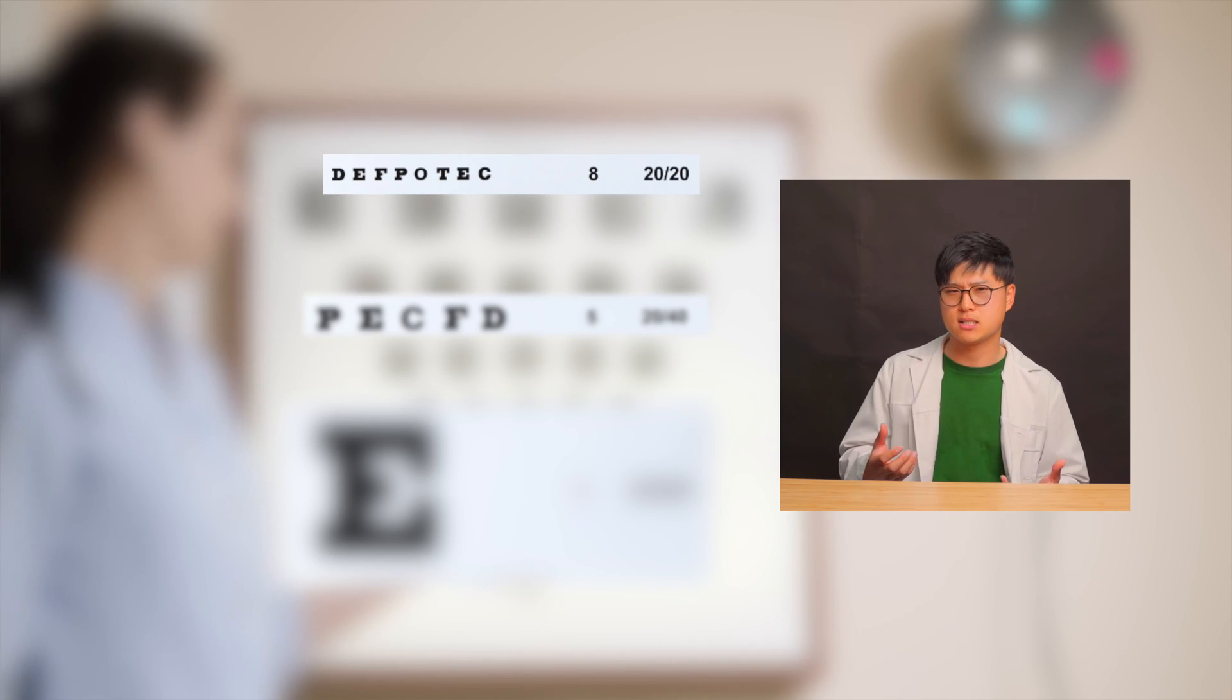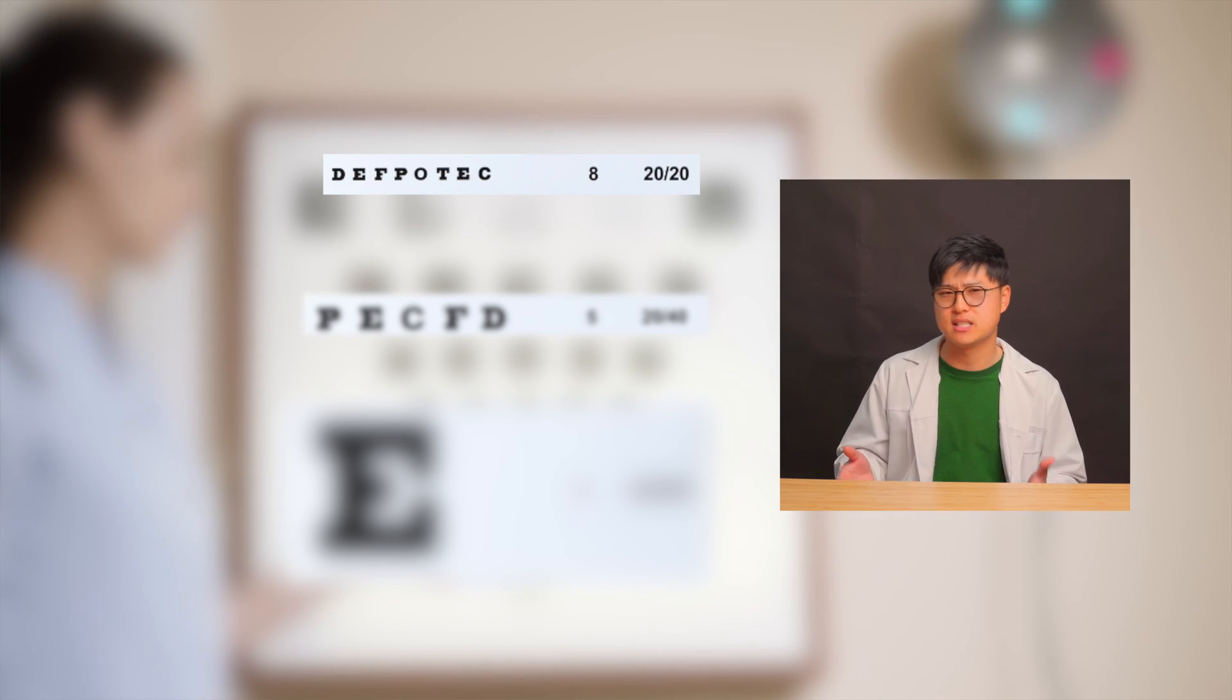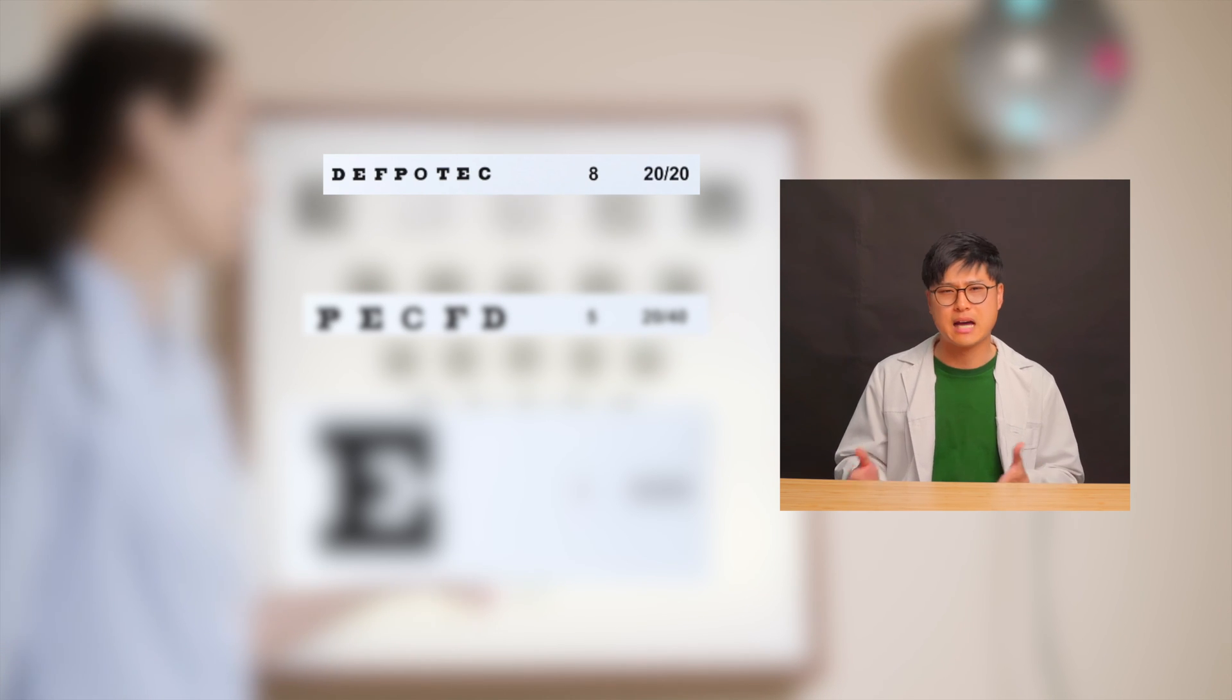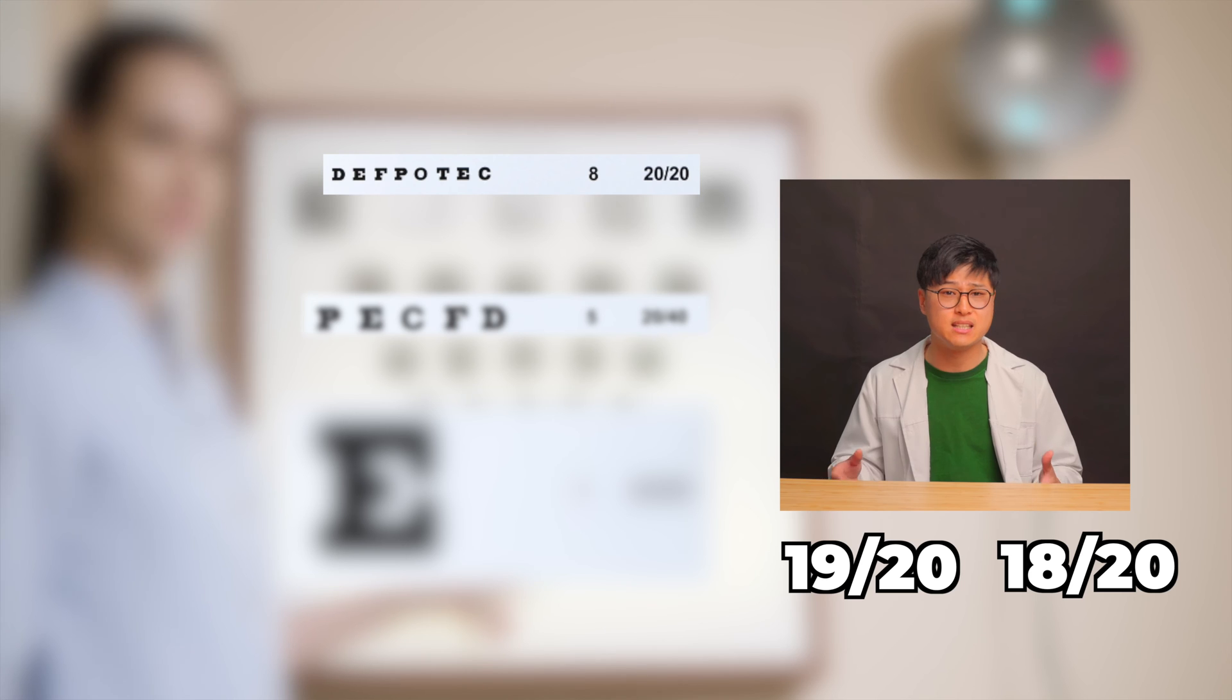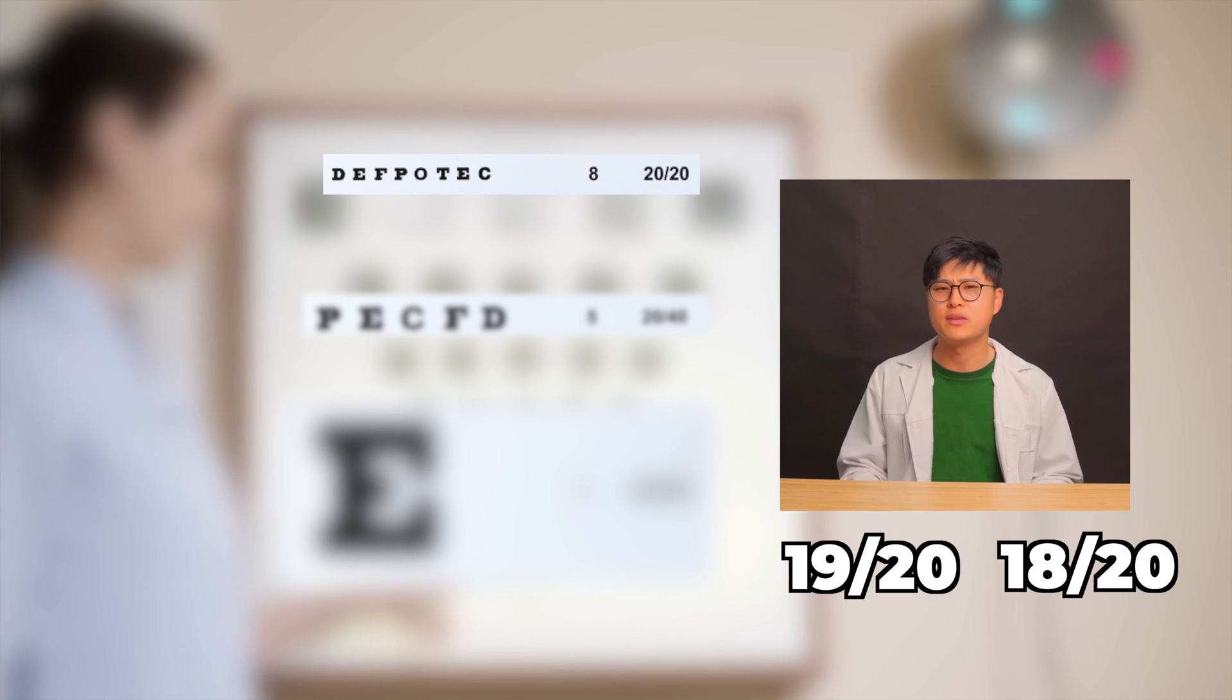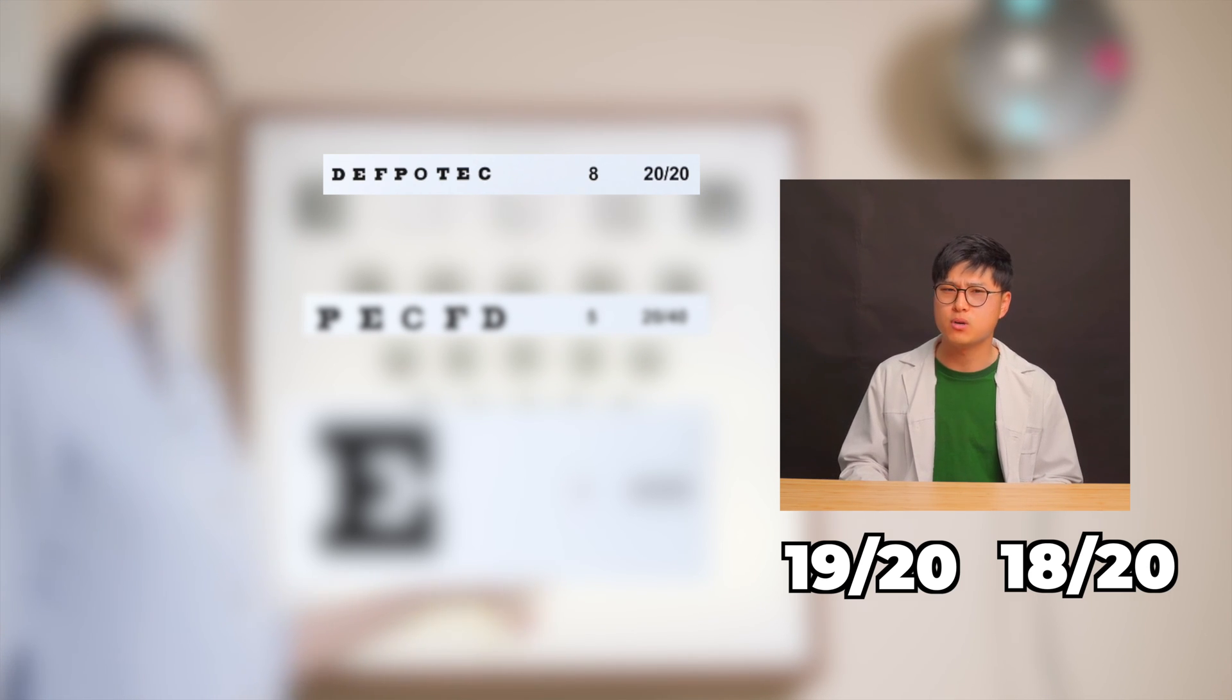I get a lot of people asking me how good their vision is after an eye test, and they'll ask things like, is it 19 over 20 vision or 18 over 20 vision? But now we know that this is not how visual acuities work.